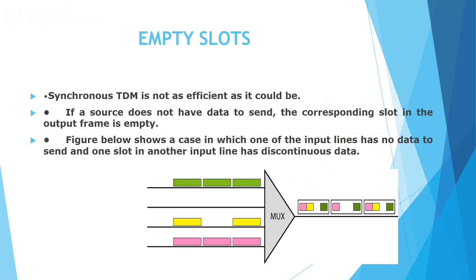In the case of synchronous TDM, each input connection has an allotment in the output connection. Therefore, synchronous TDM is not an efficient technique. If the source does not have any data to send, the slot will still be allocated in the output frame.